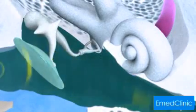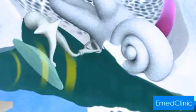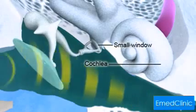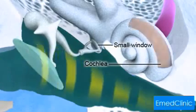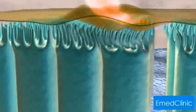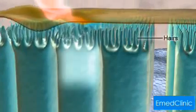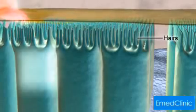The vibrations from the ossicles pass through a small window and into a part of the inner ear called the cochlea. Sound waves travel through the fluid of the cochlea and make the tiny hairs move. Here we show the hairs moving.